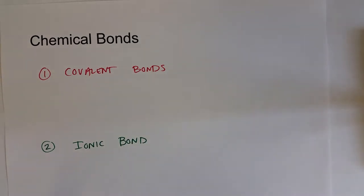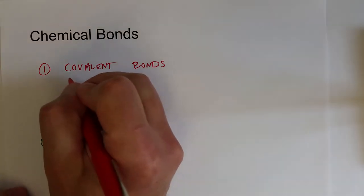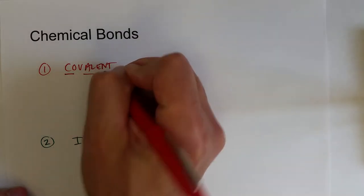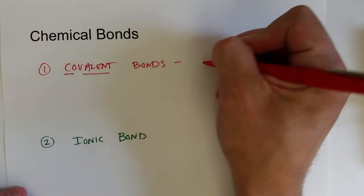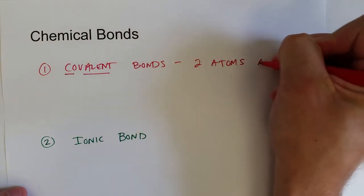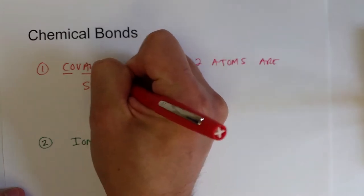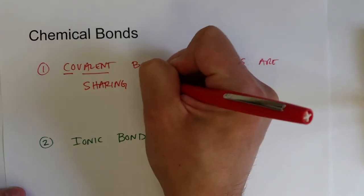The name of these two types of bonds tries to tell you what's going on between the atoms. Covalent bonds are sharing covalent electrons. So a covalent bond is between two atoms who are sharing valence electrons.